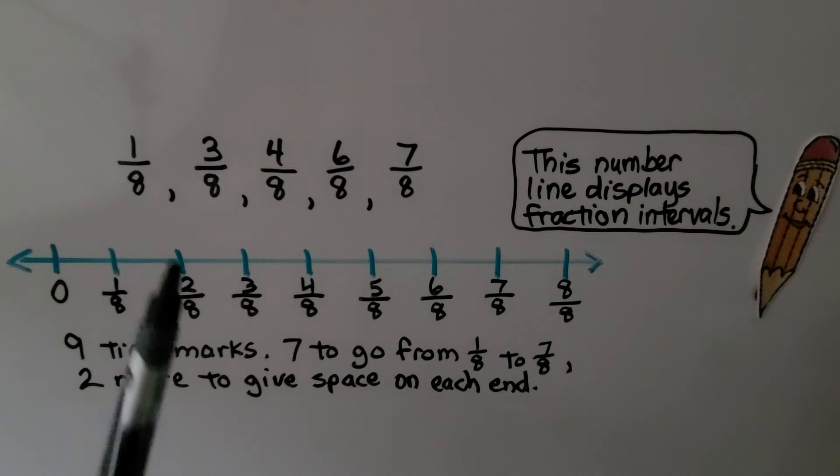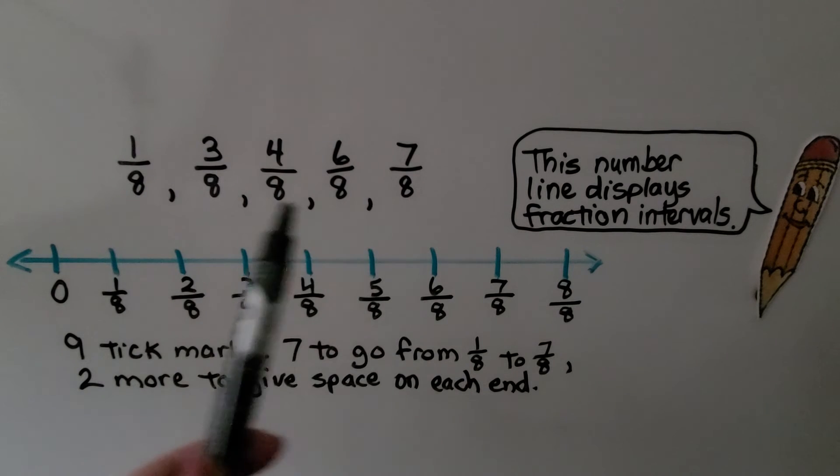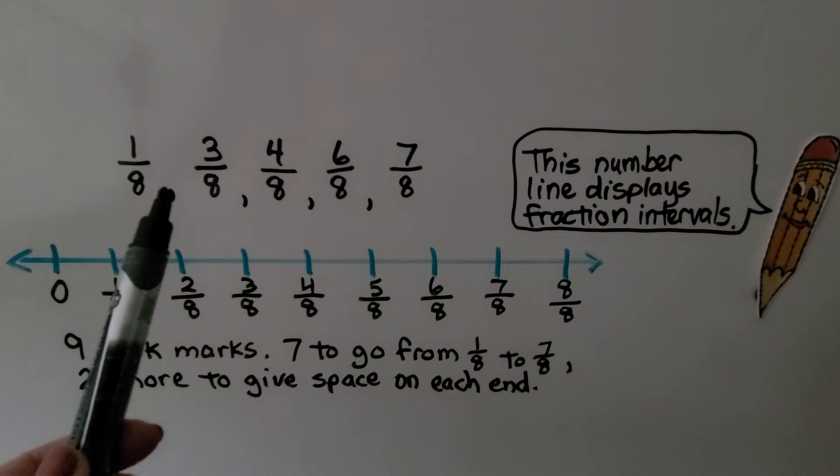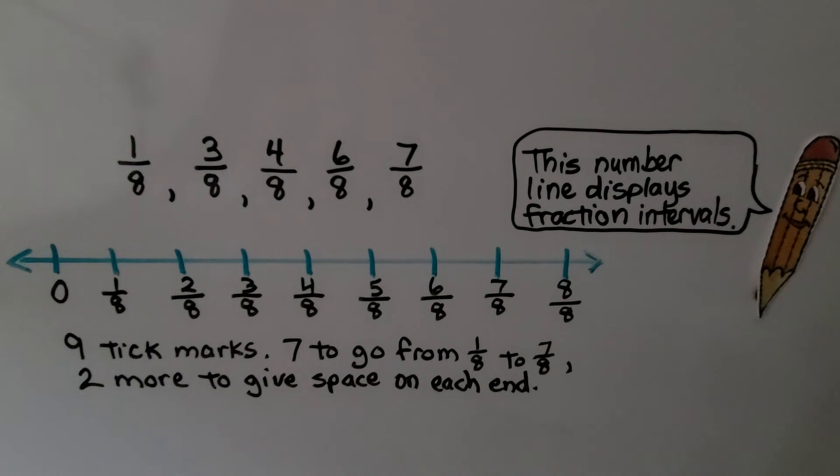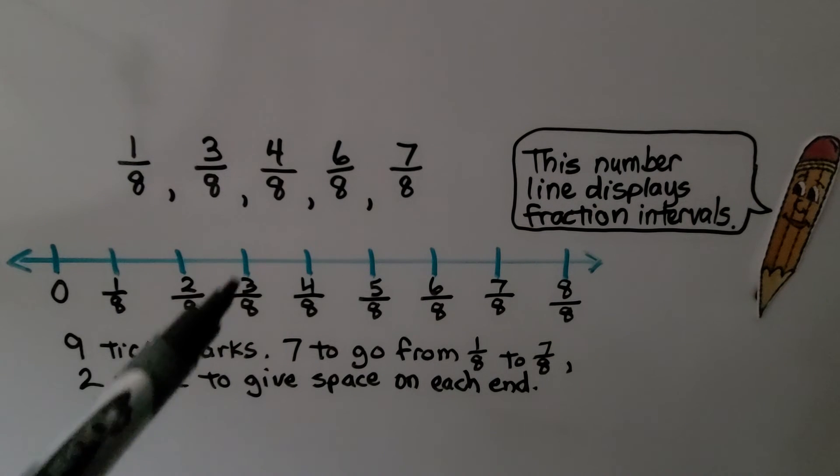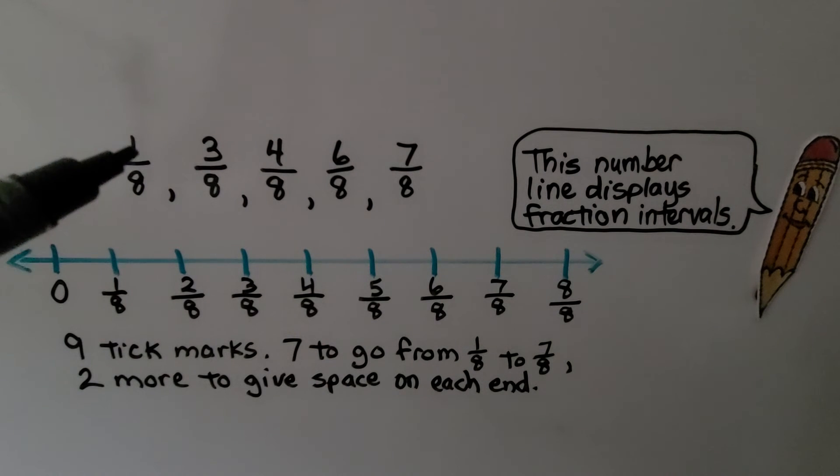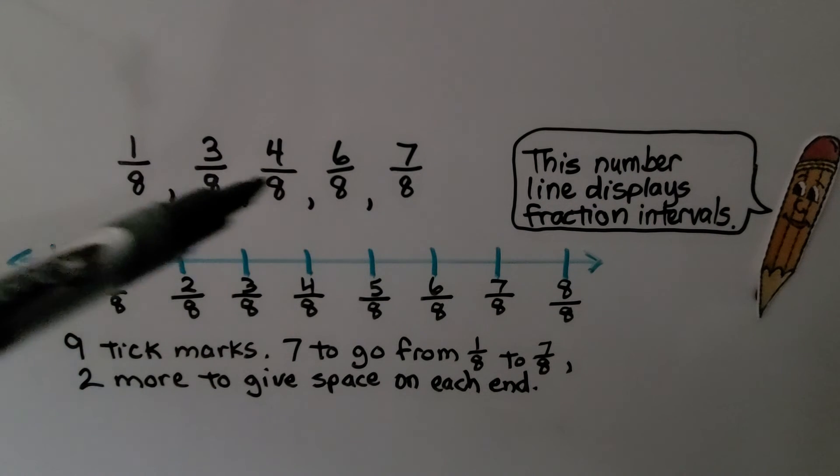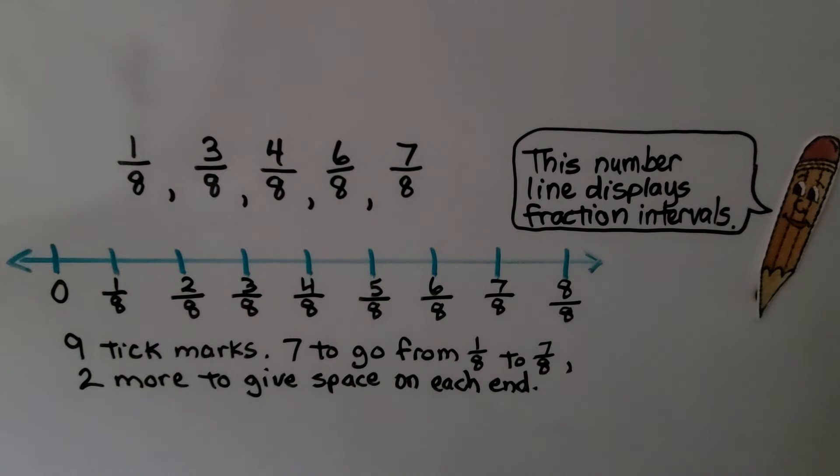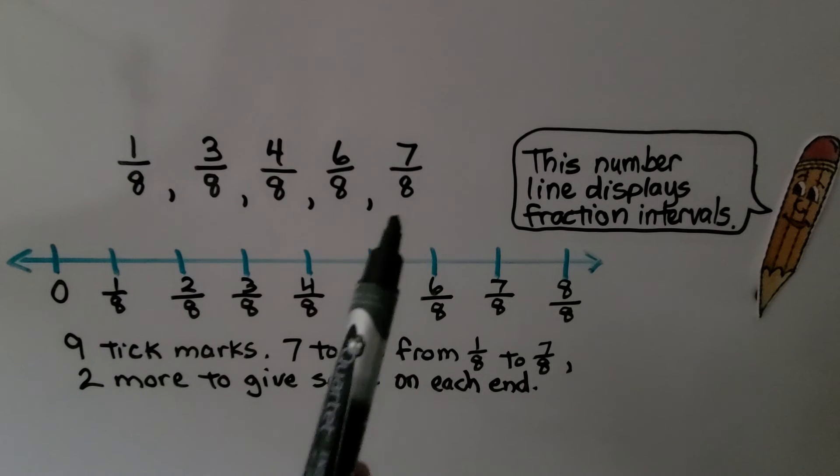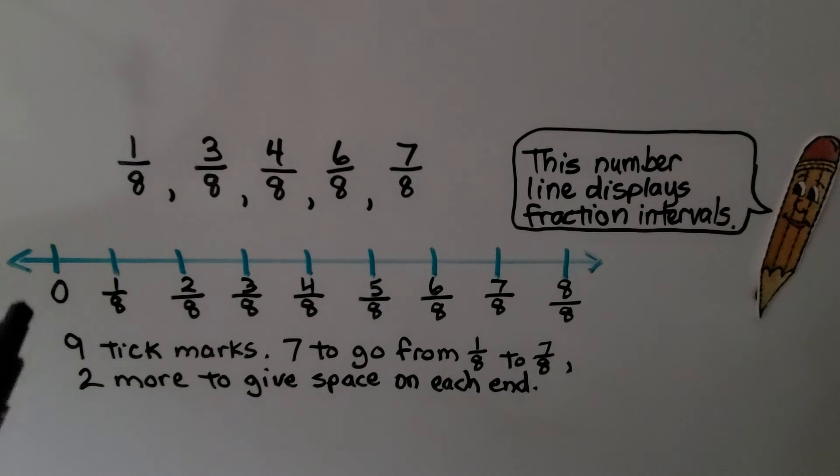Here the given values are all fractions and the denominators are all the same. They're all eighths. So we can make a number line that has intervals and are labeled with numbers in eighths. Because the first number is 1 eighth, we're going to need to start it at 0. We have 5 given numbers. We need 9 tick marks, 7 to go from 1 eighth to 7 eighths, and then 2 more to give space on each end.